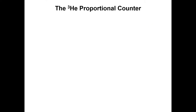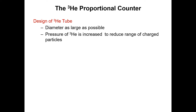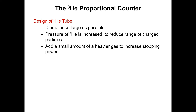Now, the helium-3 proportional counter — what is its design? Just like previous gas-filled detectors, this kind of detector has a diameter as large as possible; we use a larger diameter compared to other gas-filled detectors. The pressure of helium-3 is increased to reduce the range of the charged particle. To increase stopping power, we add a small amount of heavier gases.